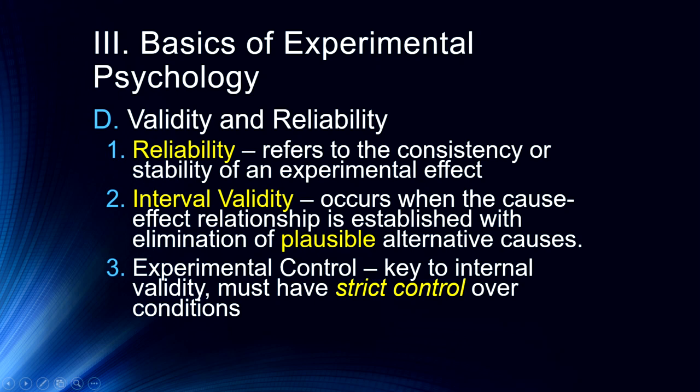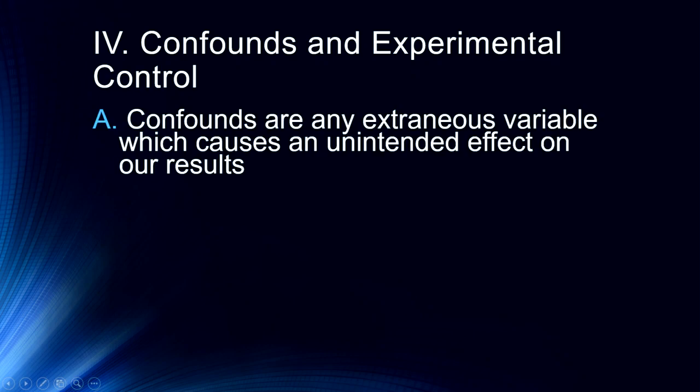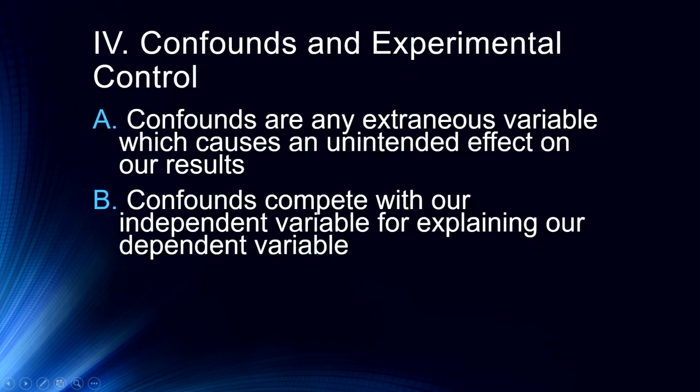The internal validity of an experiment occurs when we can establish that cause and effect relationship by eliminating plausible alternative causes. We don't have to eliminate every possible cause — just those that are plausible. By designing a good experiment, we can usually end up with good internal validity. The key to internal validity is to have strict control of our conditions and to make sure we've accounted for as many possible external variables as possible. I'll be discussing confounds and experimental control in more detail in a future video.